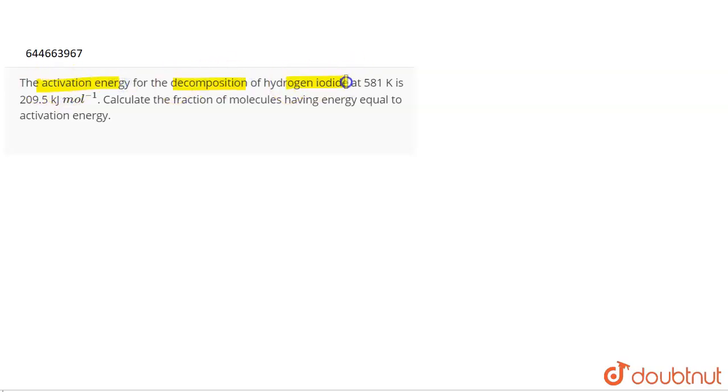the decomposition of hydrogen iodide at 581 Kelvin is 209.5 kilojoules per mole. Calculate the fraction of molecules having energy equal to activation energy.